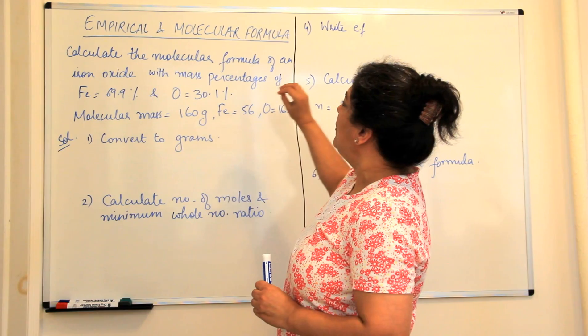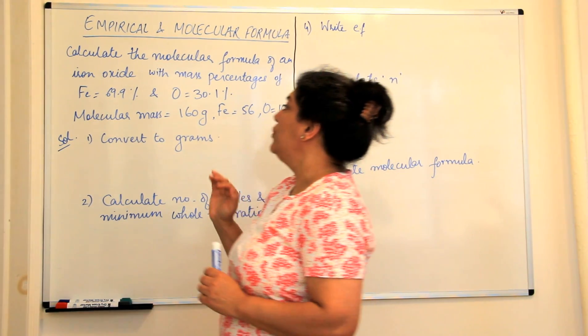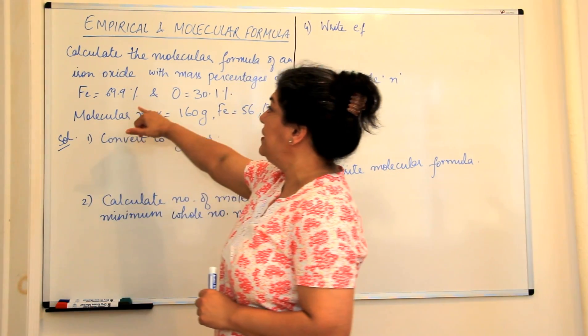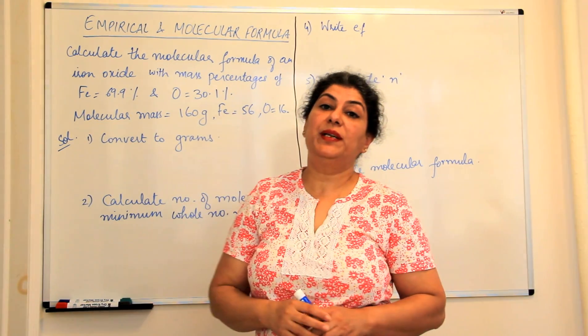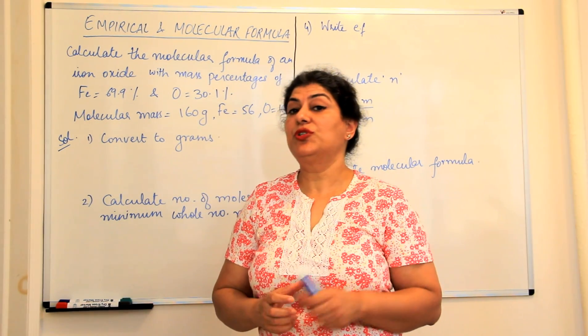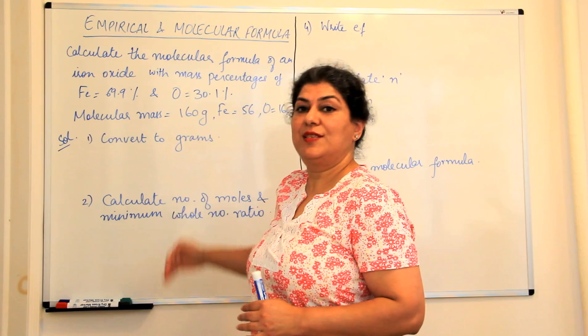You have to calculate the molecular formula of an iron oxide with mass percentage of iron 69.9% and oxygen is 30.1%. As I told you in the previous video, we'll follow the steps.